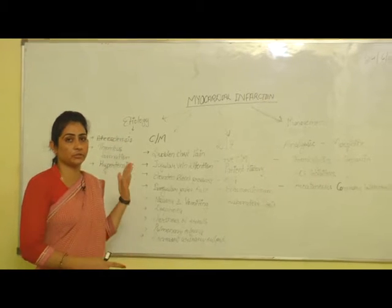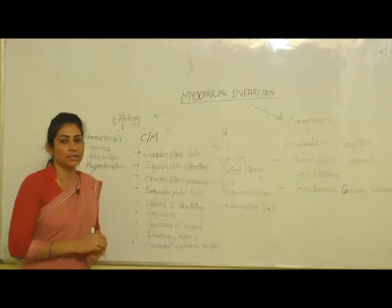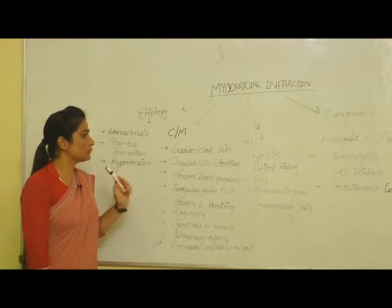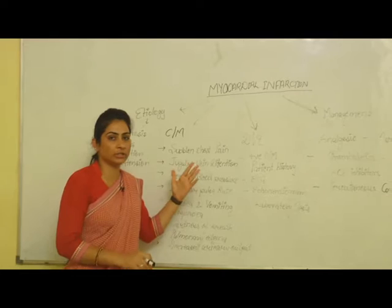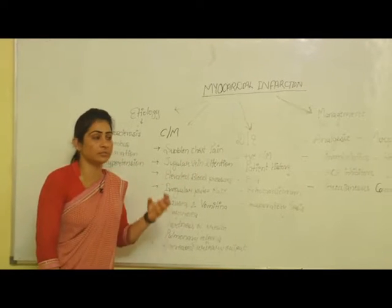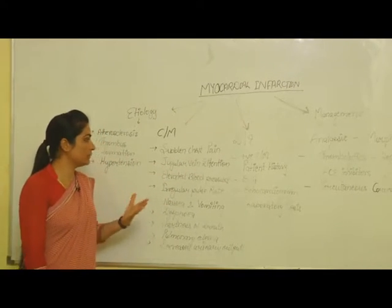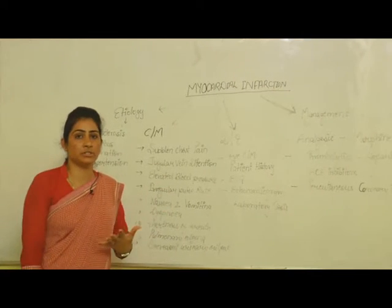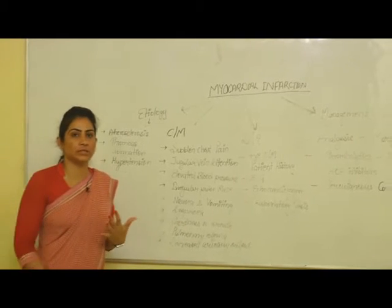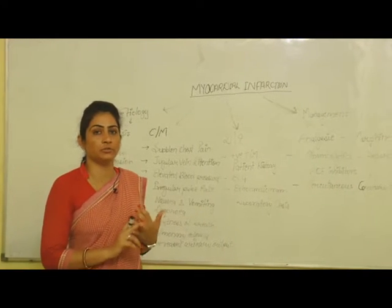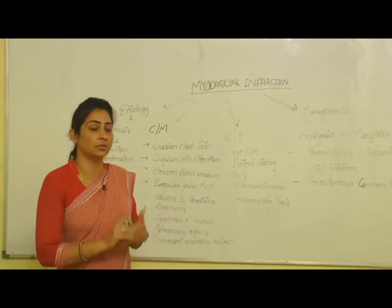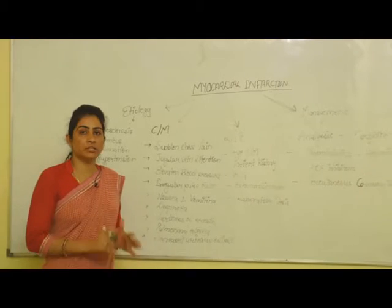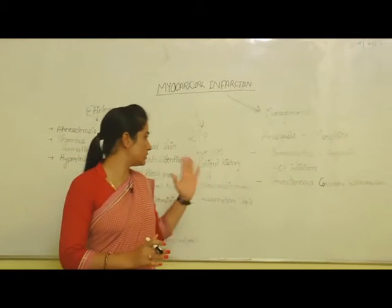These are the etiological factors of myocardial infarction. Now, the clinical manifestations: first, when the attack of myocardial infarction is felt by the patient, a sudden chest pain is felt. Secondly, the jugular vein is distended and elevated blood pressure is seen. Shortness of breath, dyspnea, vomiting, and nausea are also reported. Pulmonary edema and decreased urinary output are also reported in this disease.